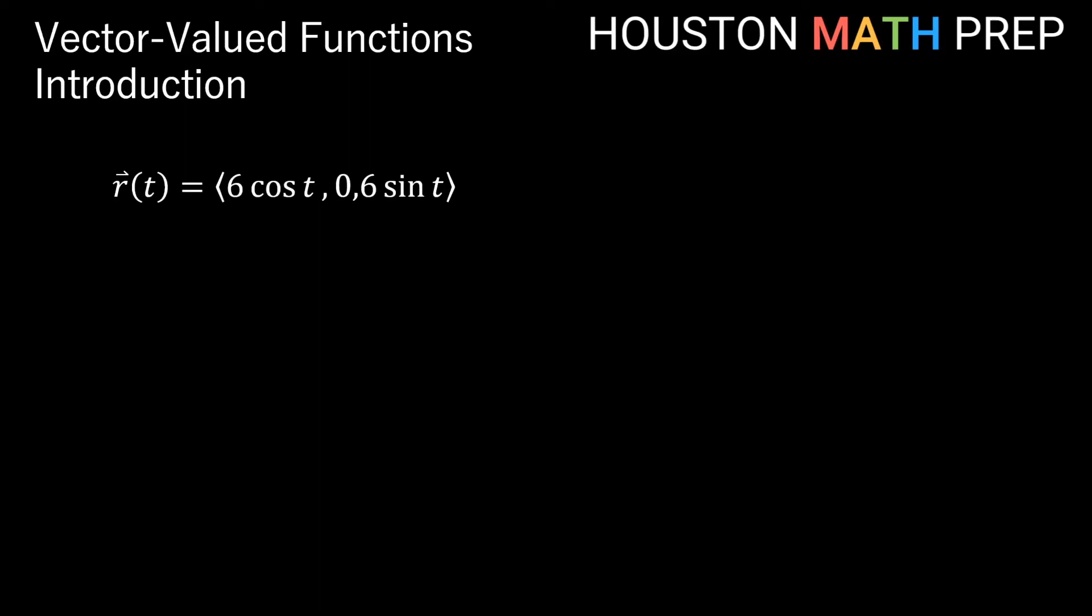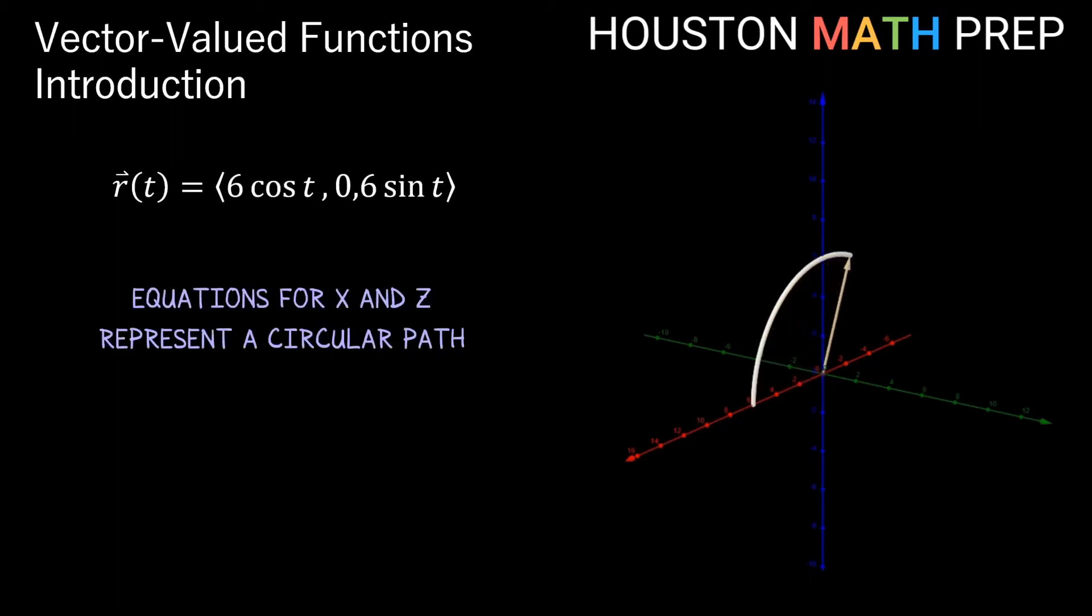For our next example, you'll notice here that the cosine and sine terms are located in the x and z components of the vector-valued function. So we should be starting to get an intuition that this means we'll have some kind of circular motion, perhaps, if we look in the direction of the xz plane.